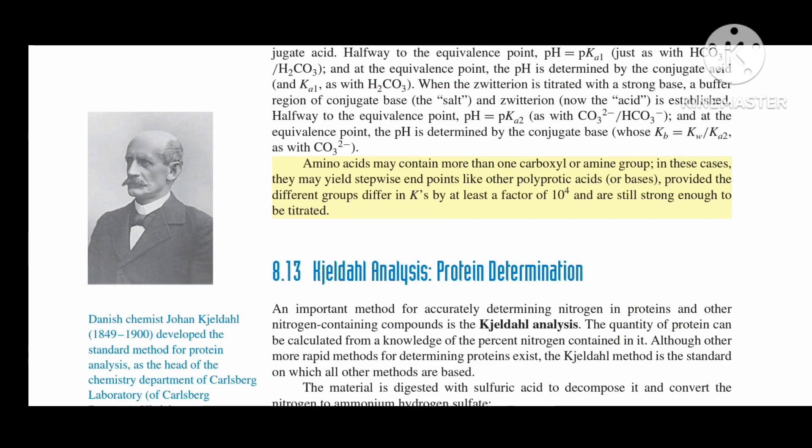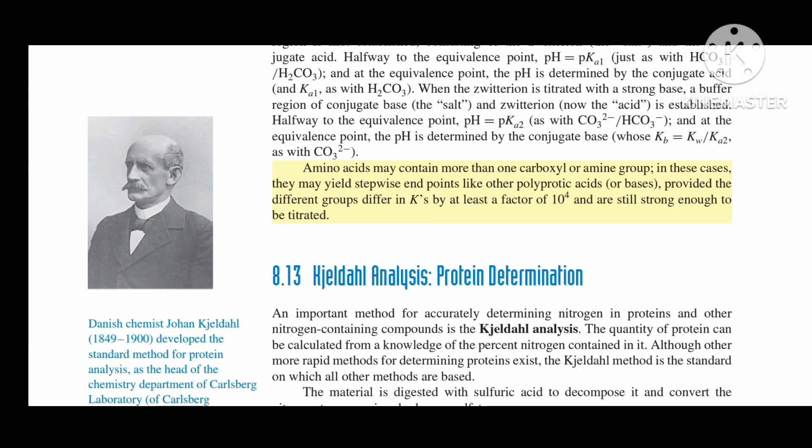Amino acids may contain more than one carboxyl or amine group. In these cases, they may yield stepwise endpoints like other polyprotic acids or bases, provided the different groups differ in Ks by at least a factor of 10⁴ and are still strong enough to be titrated.